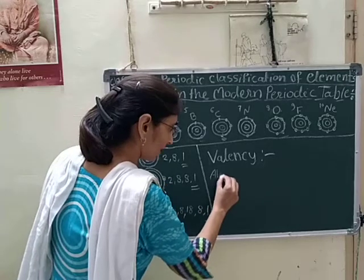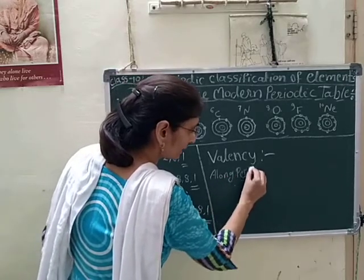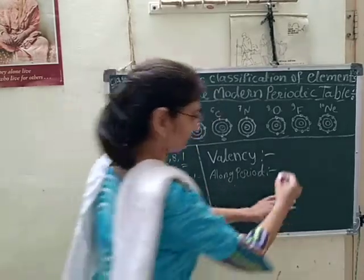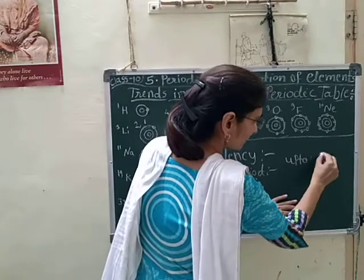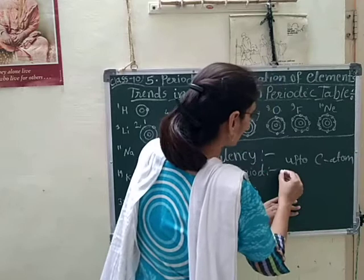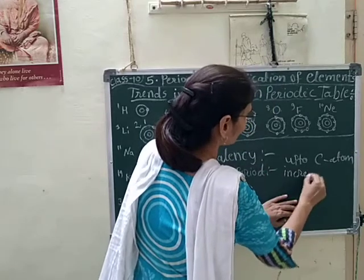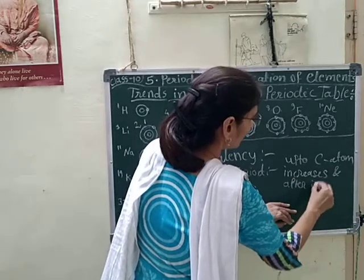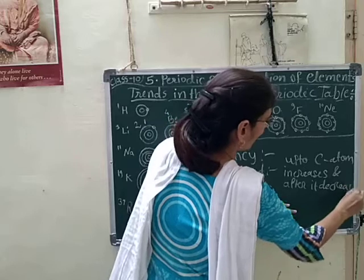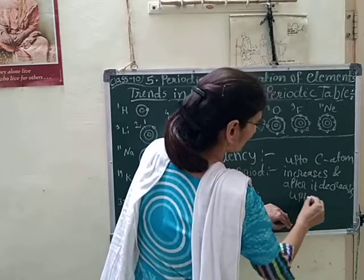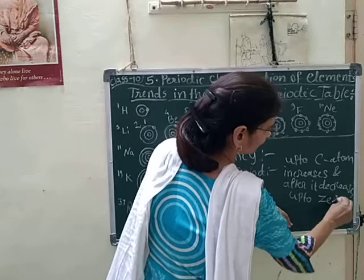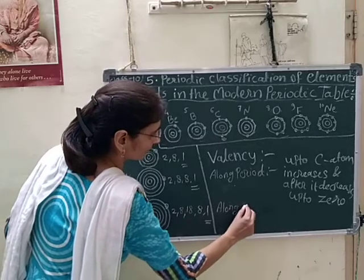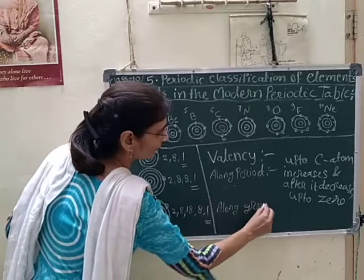So along the period, what is the trend? Up to carbon atom the valence increases, and after carbon it decreases up to zero. And along the group, we will discuss now — along the group the valence remains same.